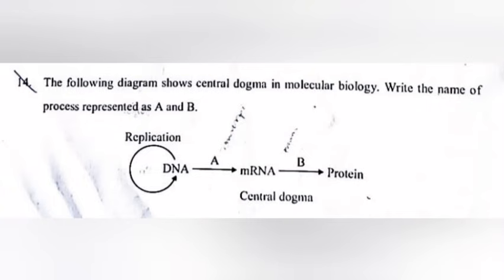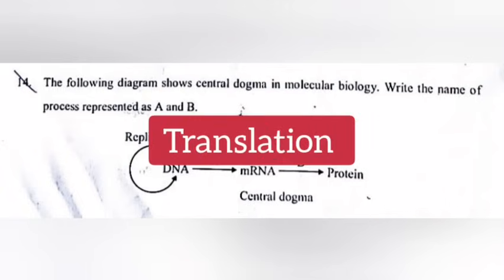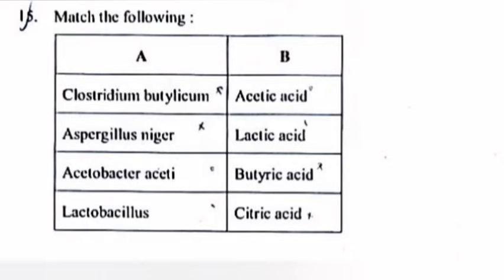Question 14: The following diagram shows the central dogma in molecular biology. Write the name of the processes represented as A and B. Answer: A — Transcription, B — Translation.